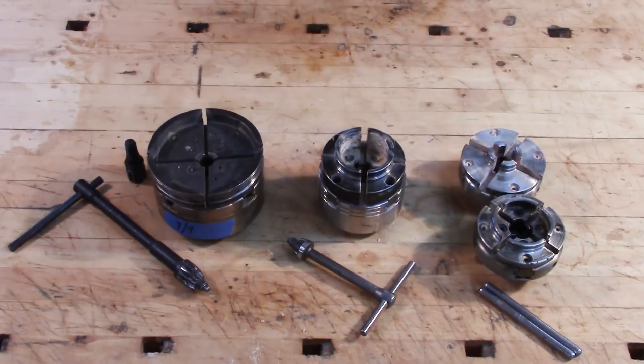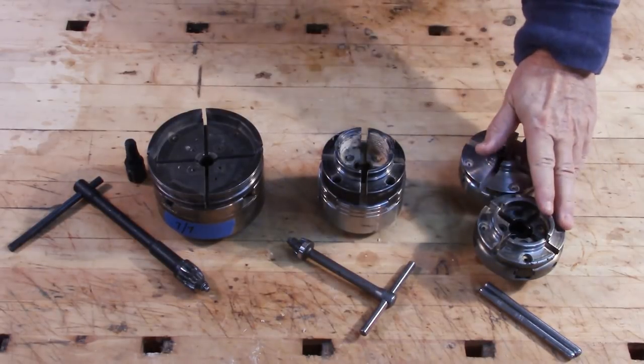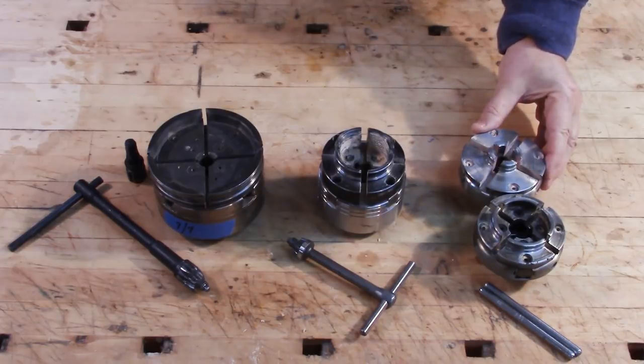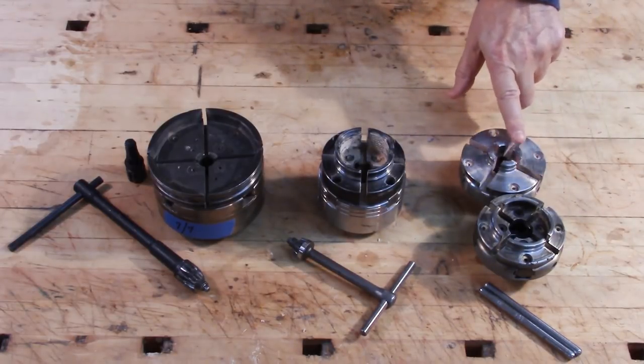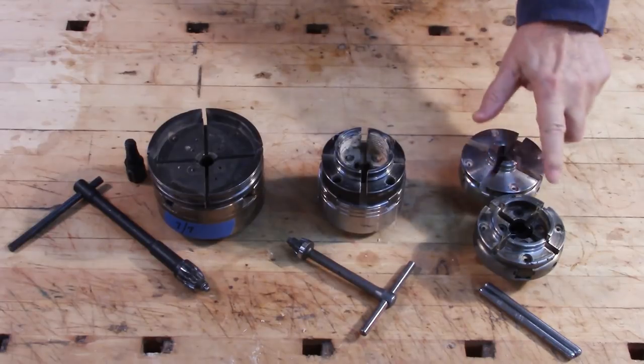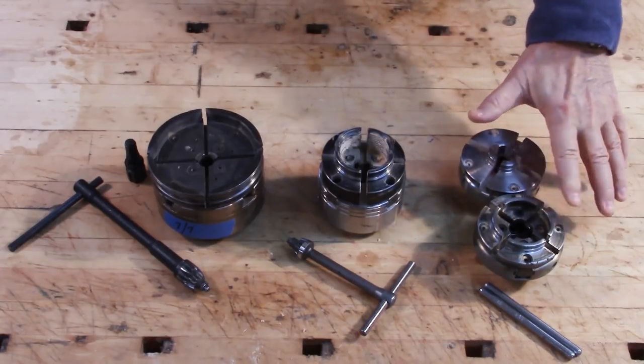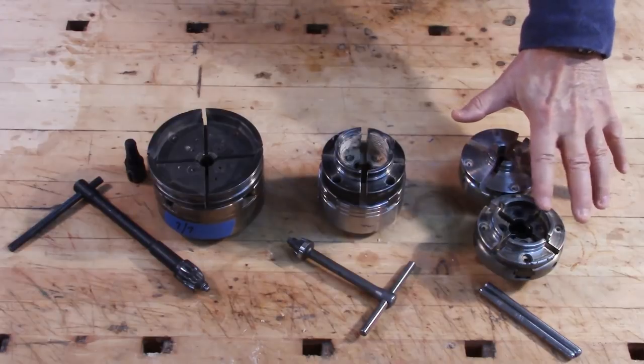Now these are the chucks that I have in my shop. This right here is the Nova Midi chuck. I have two of those, as you can see. One with small jaws, I think these are 25mm, and one with sort of the standard set of jaws, which is 50mm.